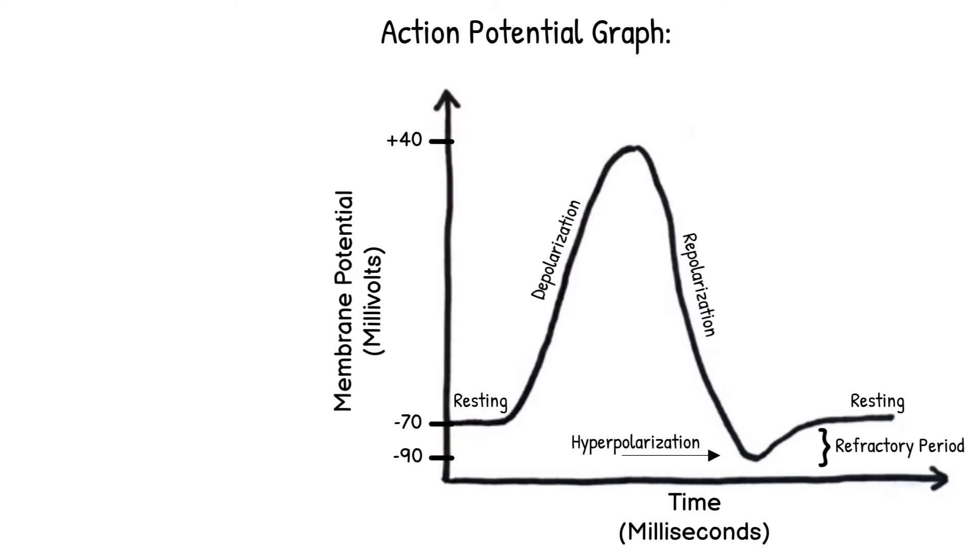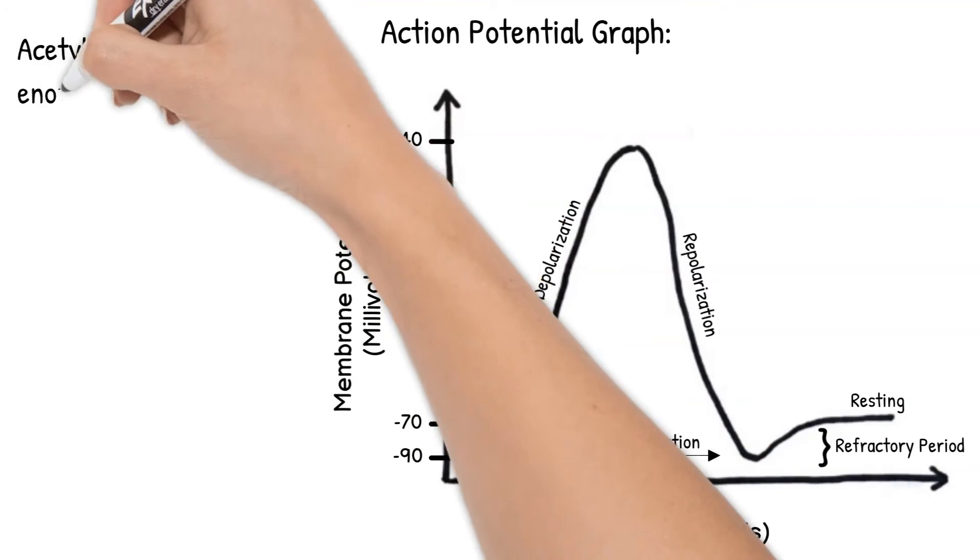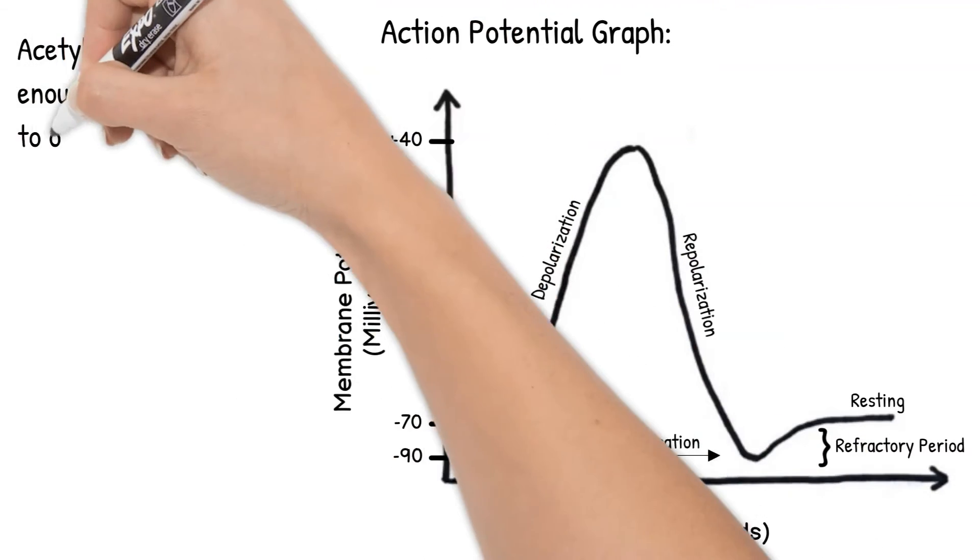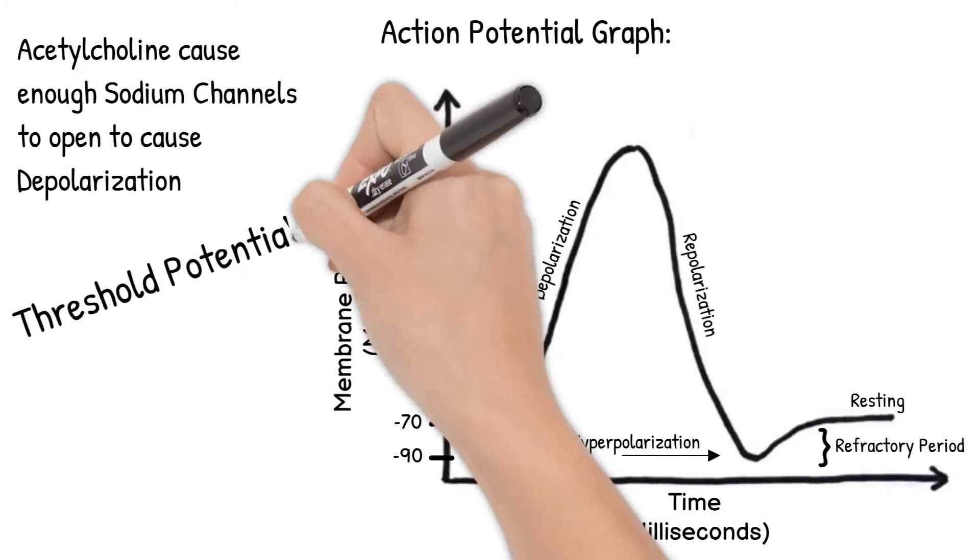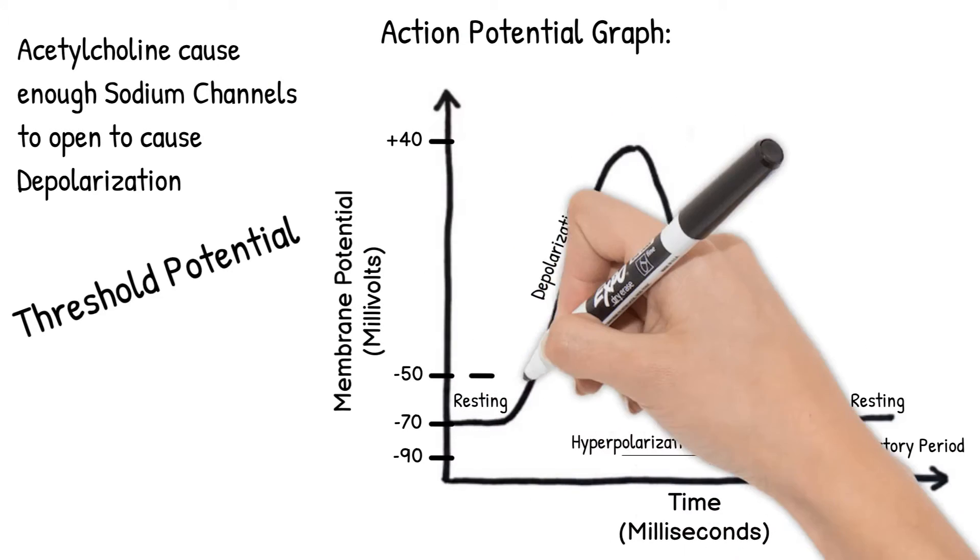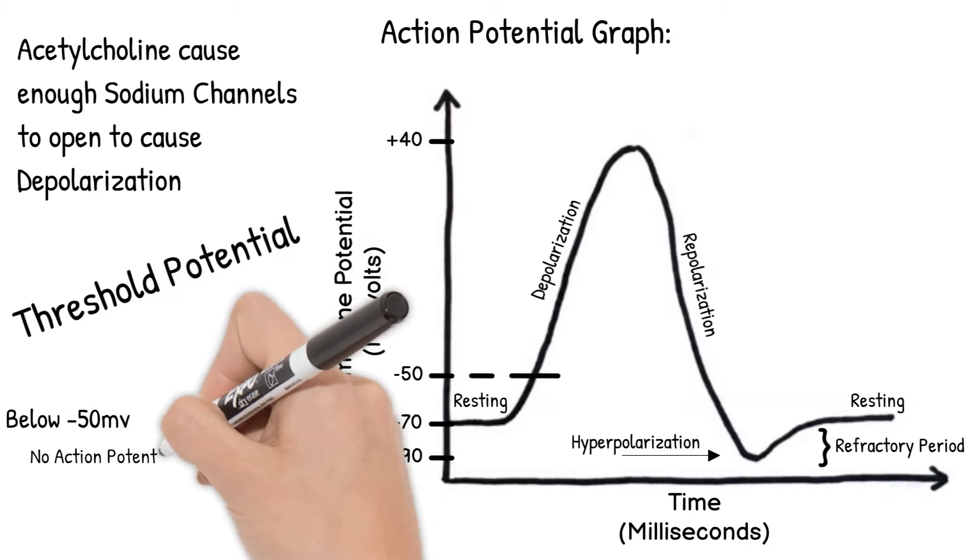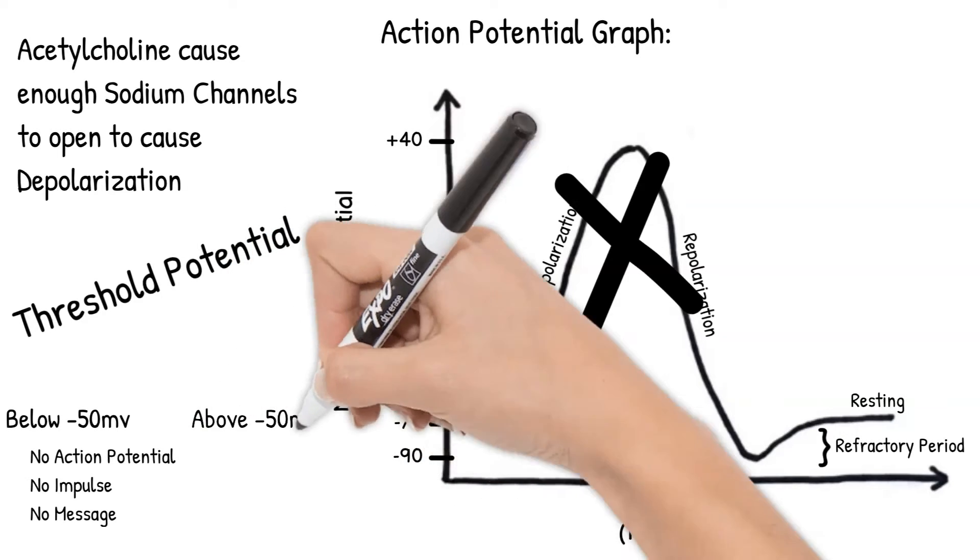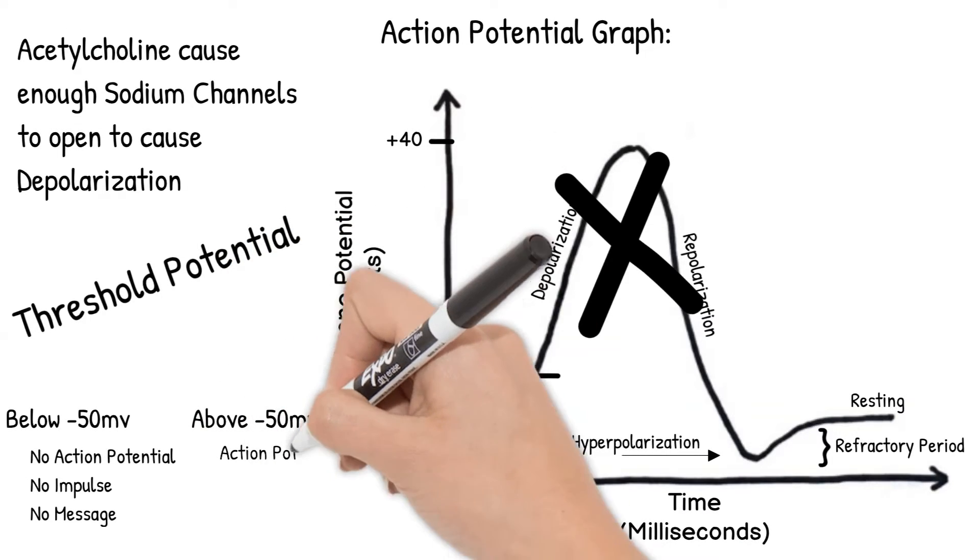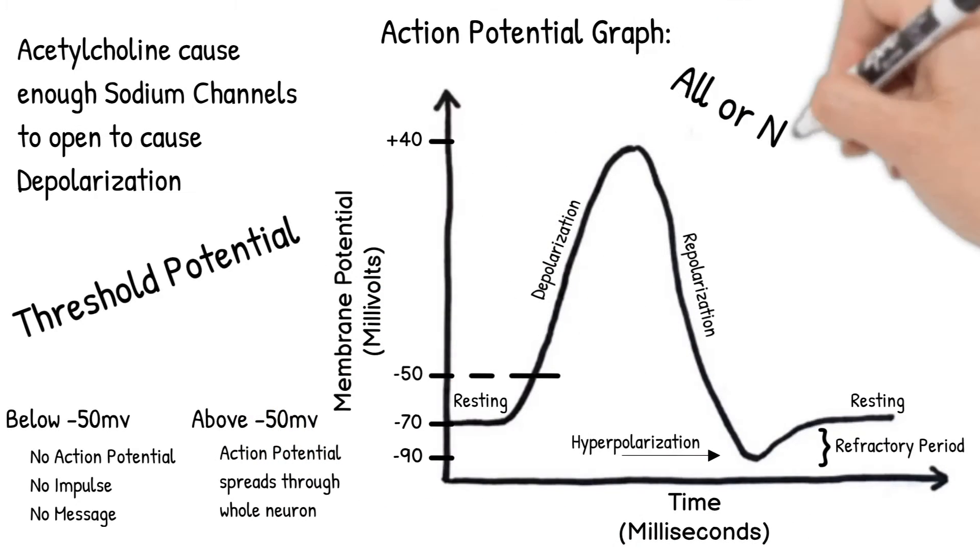Now, for an action potential to actually start, the acetylcholine has to cause enough sodium channels to open to get past negative 50 millivolts. This is called the threshold potential. If it doesn't get past negative 50 millivolts, then there is no action potential, no impulse, no message carried through the neuron. If it is stimulated above negative 50 millivolts, then the action potential spreads down the whole neuron. This is called all-or-none response.